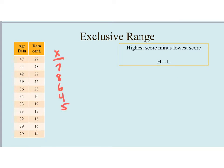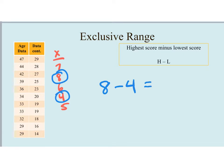Let's try this with another data set. We have variable x with raw scores of 7, 8, 6, 4, and 5. To find the exclusive range, identify the highest score, which is 8, and the lowest, which is 4. Note that highest and lowest refer to value or meaning, not position as written. The highest value is 8, we subtract the lowest value of 4, and we get an exclusive range of 4 for variable x.